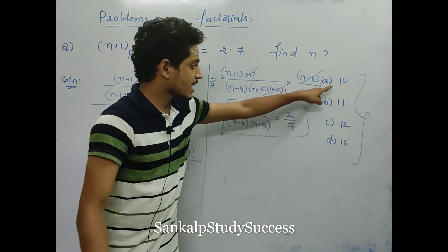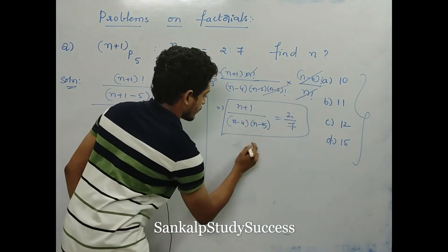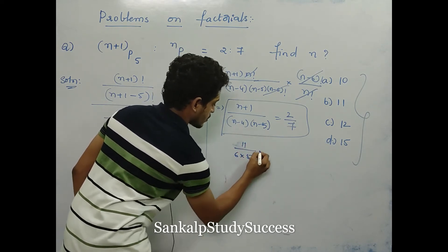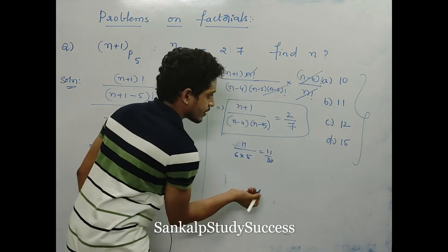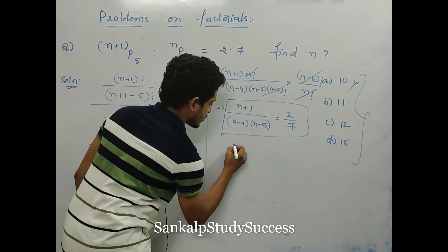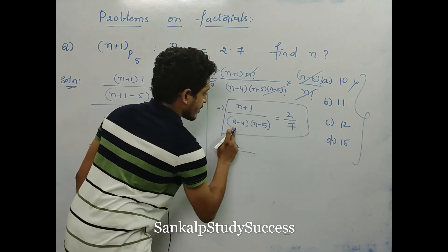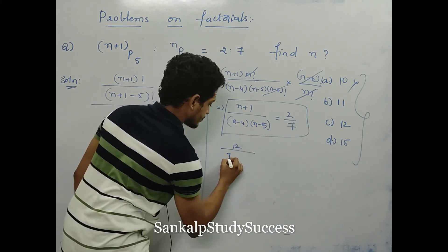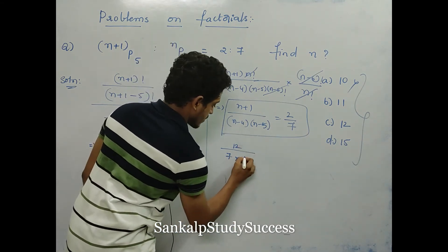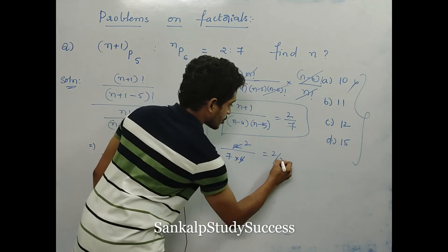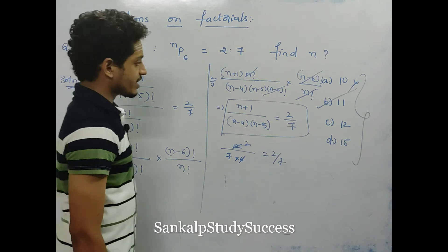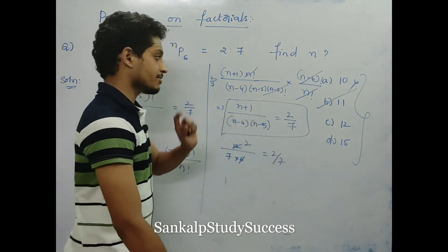We try n equals 10: 10 plus 1 is 11, divided by (10 minus 4) times (10 minus 5) = 6 into 5 = 30. 11 by 30 — not 2 by 7. Try n equals 11: 12 divided by 7 into 6 = 42. 12 by 42 = 2 by 7. Yes! So n equals 11 is the answer — option B.